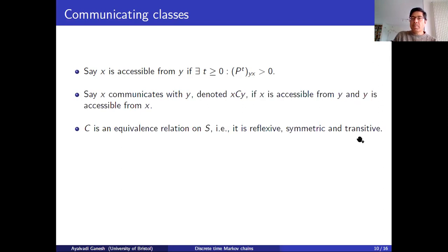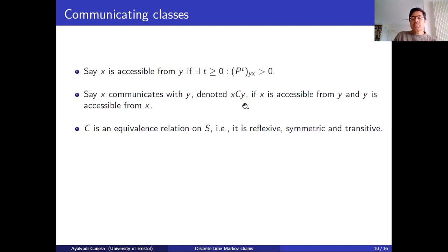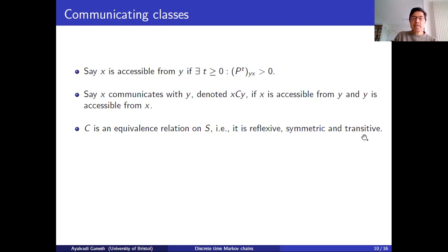Is it transitive? That means if x is related to y and y is related to z, then x must be related to z. If x communicates with y, there's some t1 such that the (x,y) element of P^t1 is positive. Similarly, it's possible to get from y to z in t2 time steps because y communicates with z. Given these two statements, it's possible to get from x to z in t1+t2 time steps. So z is accessible from x, and by the same reasoning, x is accessible from z. So x communicates with z, showing the relation is transitive.